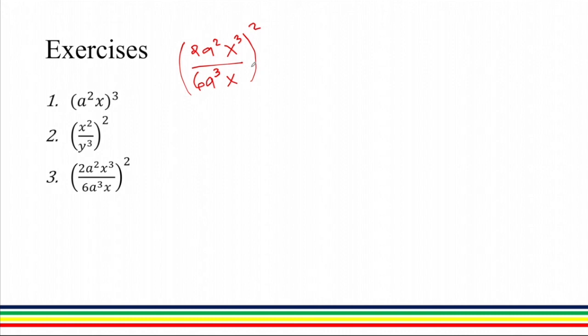We can start off with the power here. And since all the terms are being multiplied and divided, we can just simply distribute the exponent 2 to all of the terms. We have 2 raised to 2, a raised to 2 times 2 because a already has an exponent of 2, x raised to 3 times 2. And for the denominator, we have 6 raised to 2, a raised to 3 times 2, and x raised to 2.